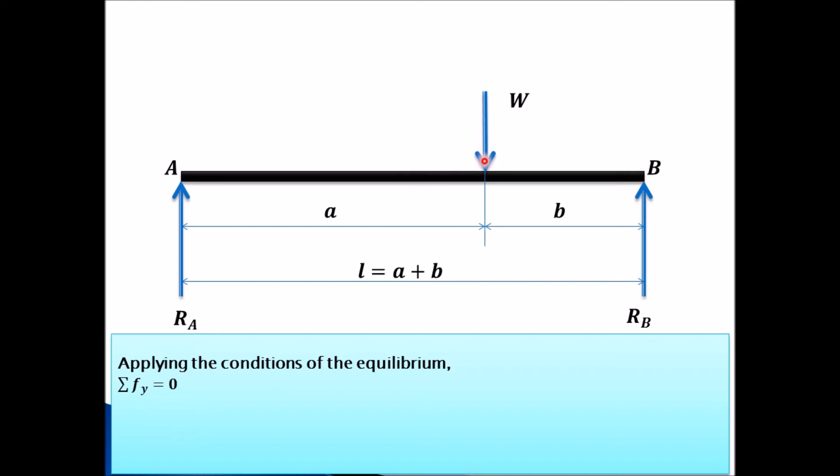So RA plus RB minus W is equal to zero. Transfer this minus term on the other side will become plus. So RA plus RB is equal to W.